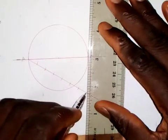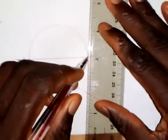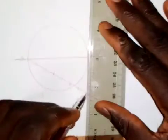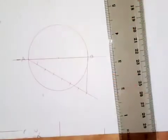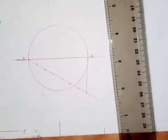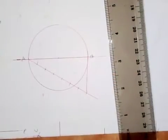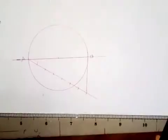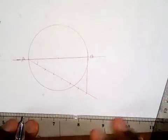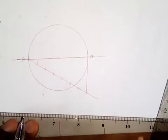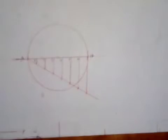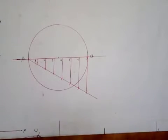The last point I will join to this end of the line — I believe you know how to divide a given line into a number of equal parts. I'm going to use my set square to draw parallel lines to this point. The line has now been divided into seven equal parts.